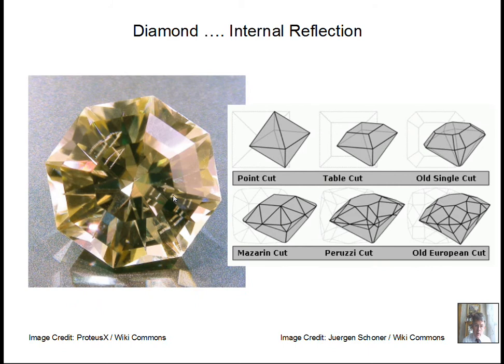Why are diamonds so desired for their optical properties? Diamond has a very high index of refraction, which gives it a low critical angle. Experts cut facets into diamonds to create many internal bounces before light exits — combined with dispersion effects, this causes colors to spread out, making the diamond sparkle. The angled cuts create opportunities for light to bounce around several times inside the diamond before emerging.